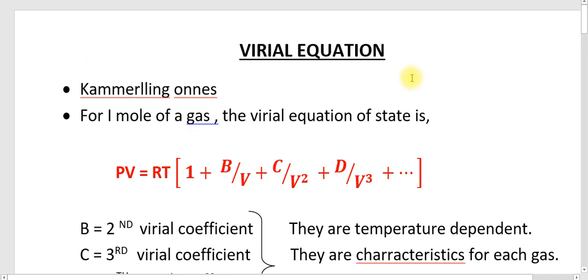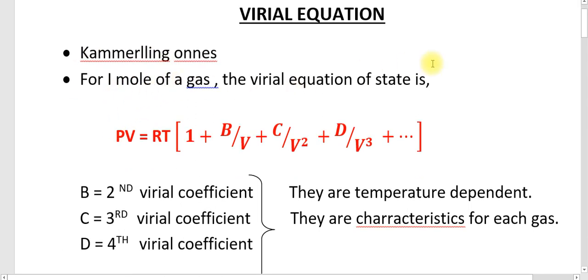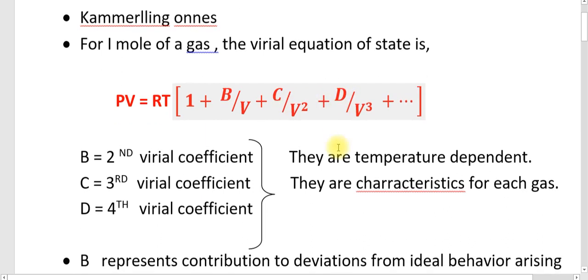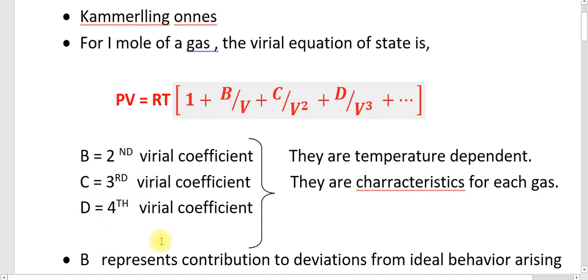The virial equation was found by Kamerlingh-Onnes. For one mole of a gas, the virial equation of state is: PV equals RT into 1 plus B by V plus C by V square plus D by V cube, and so on. Here, B is the second virial coefficient, C is the third virial coefficient, and D is the fourth virial coefficient.